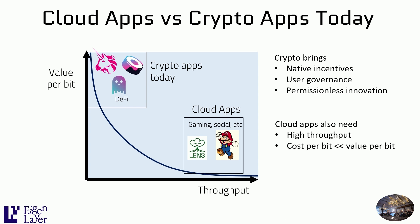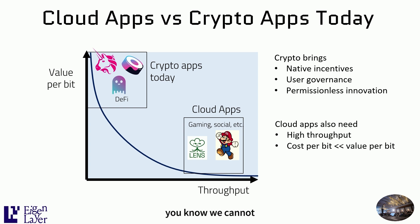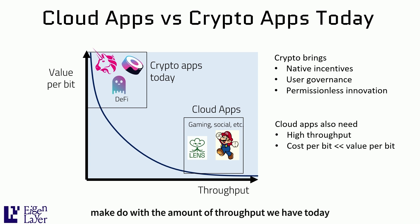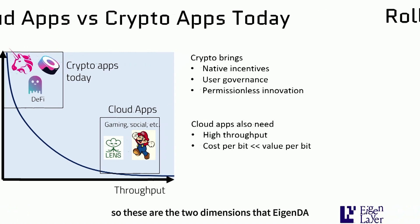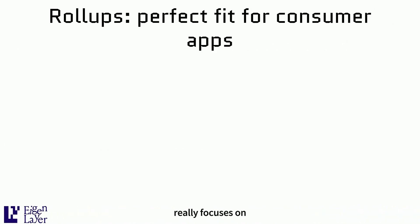Cloud apps also need very high throughput. We cannot make do with the amount of throughput we have today. We also need very low cost per bit. These are the two dimensions that EigenDA really focuses on.